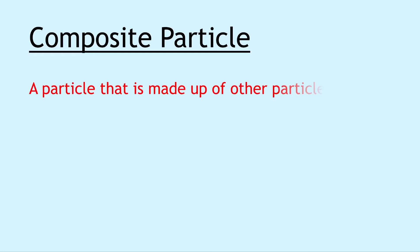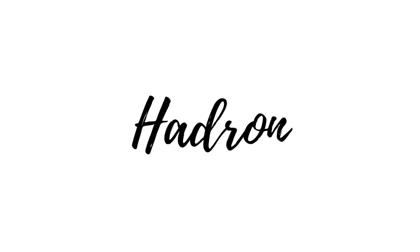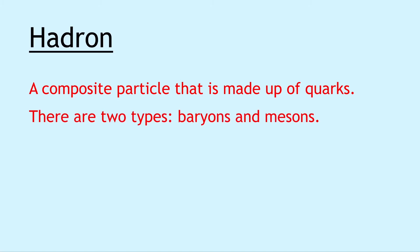Moving on, we have a composite particle, which is opposite to a fundamental particle. This is a particle that is made up of other particles. It is not a fundamental particle. Next we have the hadron. A hadron is a composite particle that is made up of quarks. There are two types of hadrons: baryons and mesons.